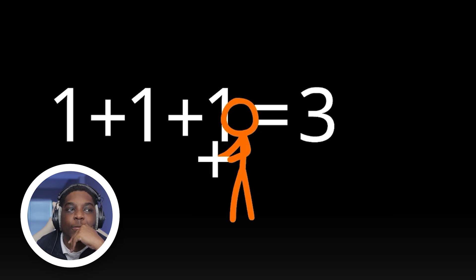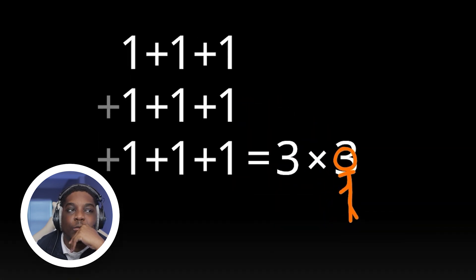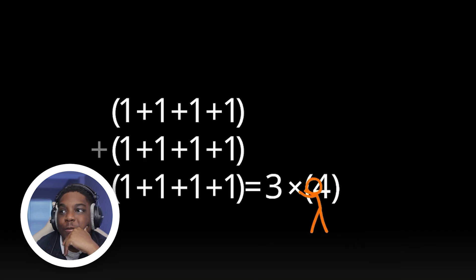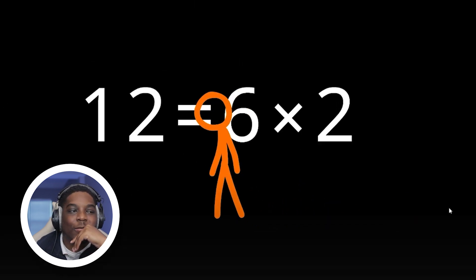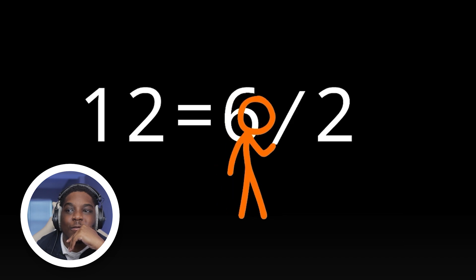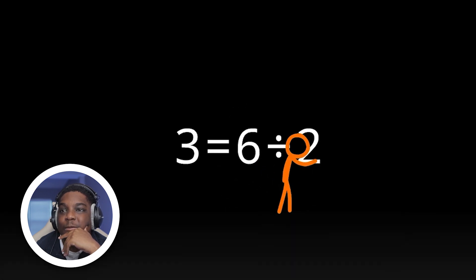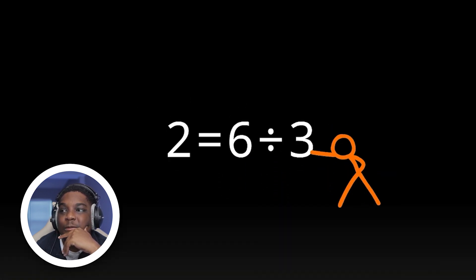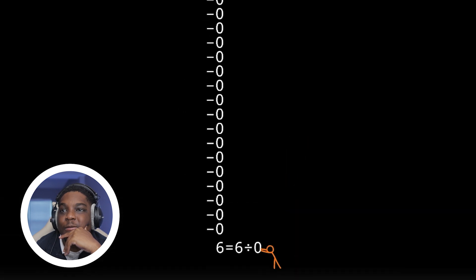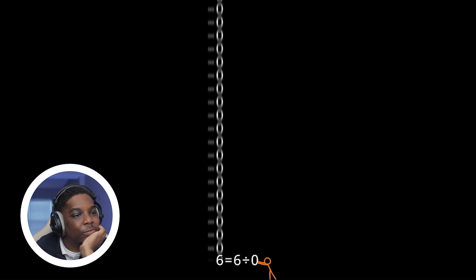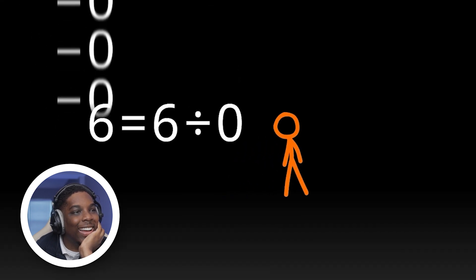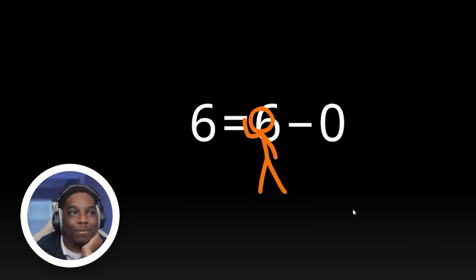Negative numbers cancel each other out. Now he's doing division. You can't divide by zero — it's impossible to divide by zero — which is why he had an infinite list. You just can't do it.